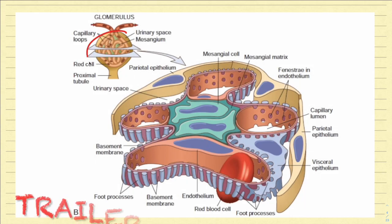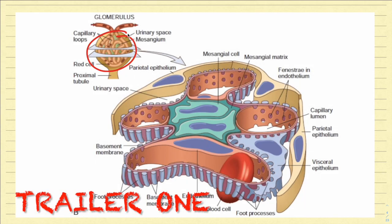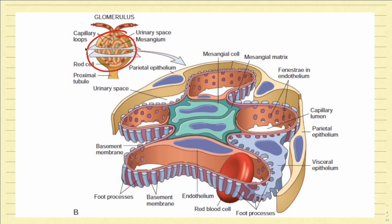Here is the glomerulus, consisting of the capillary loops. If we take a transverse section of the glomerulus, this is what we get. Let us try to understand from the center outwards what structures we are reading. At the level of the center, the first structure we can see is the mesangial cells.